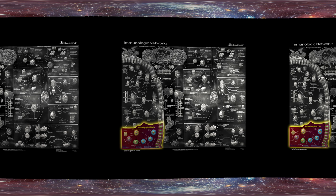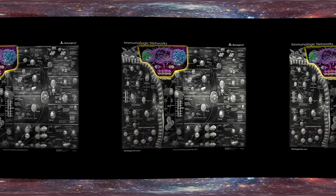Once APCs have encountered their target and internalized it, they can exit to a nearby draining lymph node. Endogenous or internal antigen peptides are transferred onto MHC1 for presentation to CD4 positive T cells. Exogenous or external antigen peptides are placed into an MHC2 groove, to be shown to CD8 positive T cells. If the T cell is co-stimulated and has a T cell receptor specific for its target, the T cell will start an immune response.